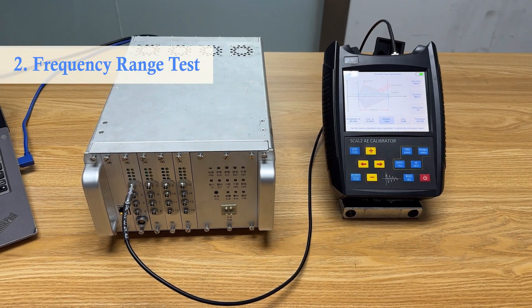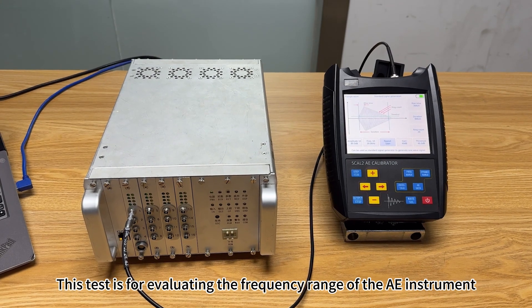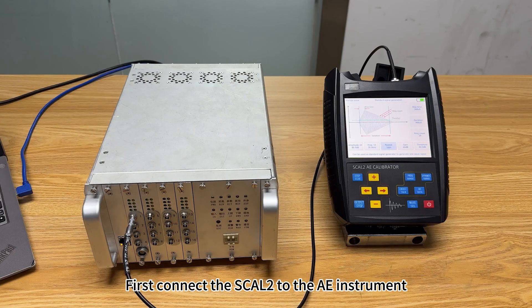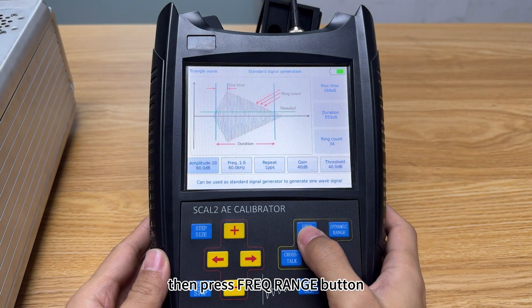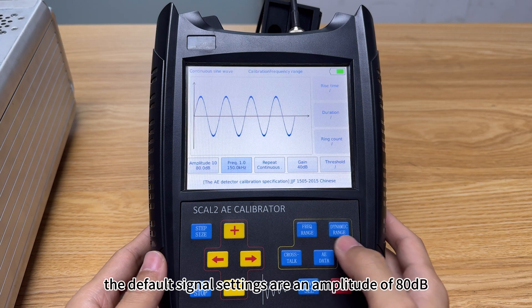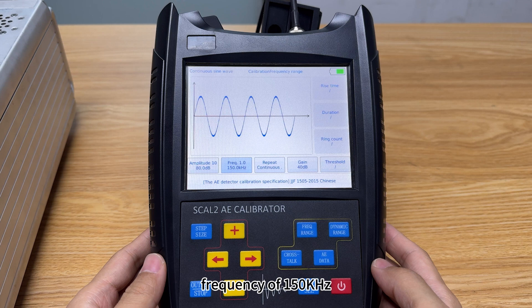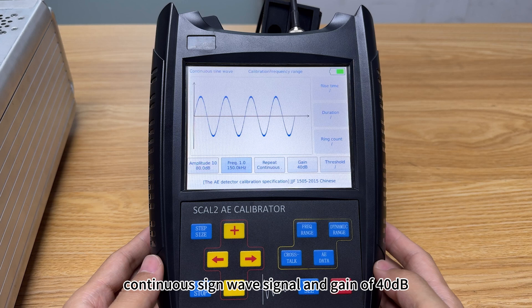Frequency range test. This test is for evaluating the frequency range of the AE instrument. First, connect the SCAL-2 to the AE instrument. Then, press frequency range button. The default signal settings are an amplitude of 80 dB, frequency of 150 kHz, continuous sine wave signal, and gain of 40 dB.